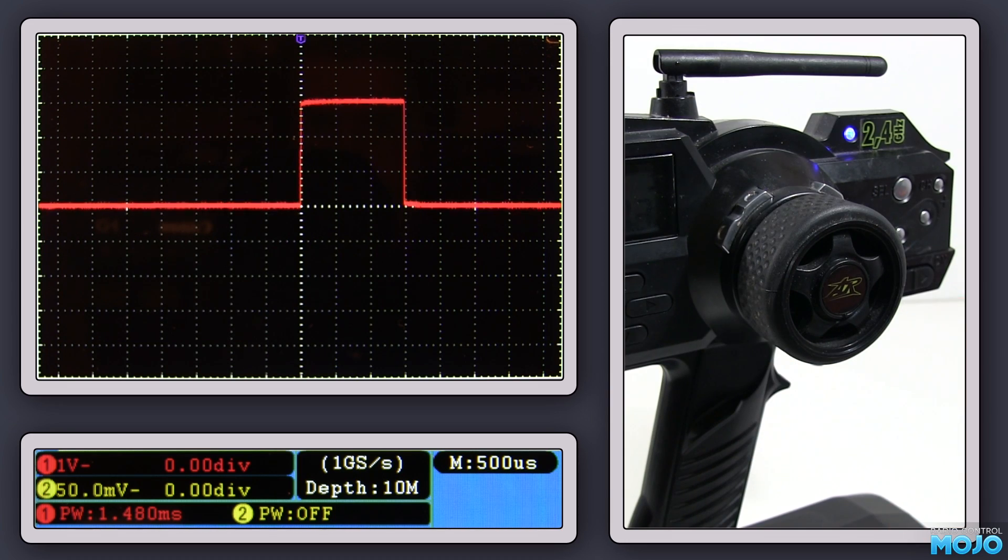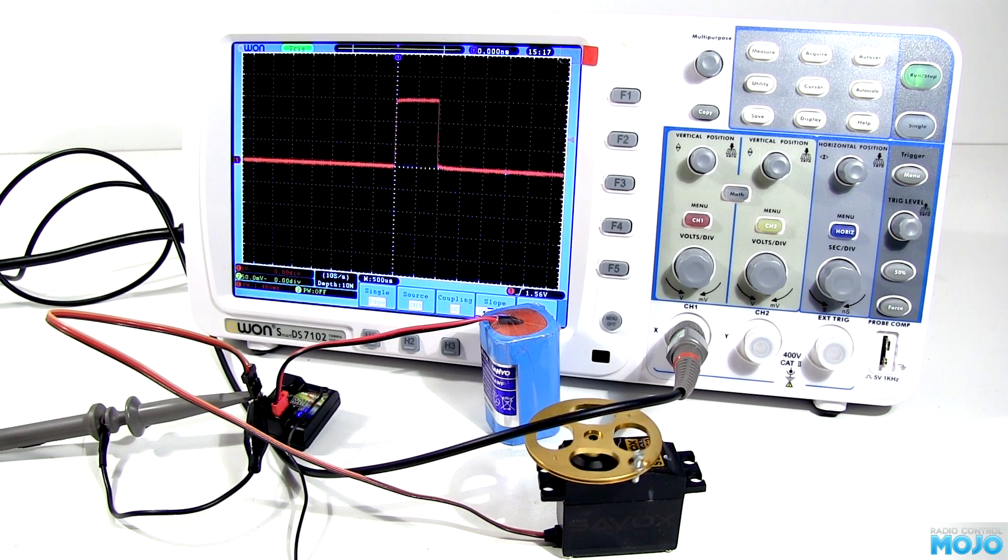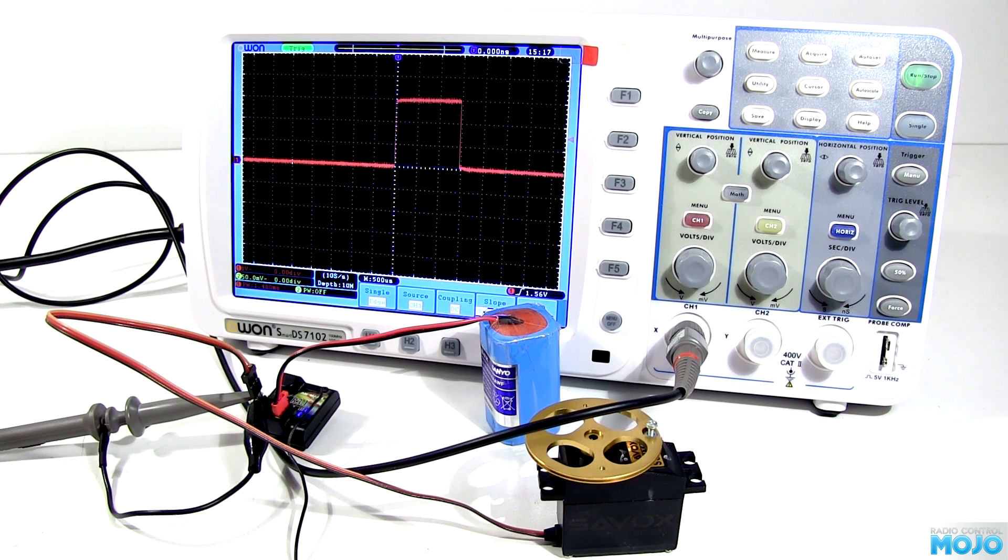Actually, the spec for the pulse width is 1 to 2 milliseconds. So the Ansmann default is pretty close. So, now we have something to work with.